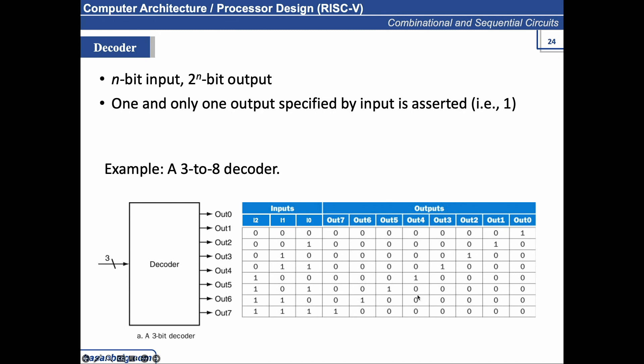So here is a truth table for this one. I0, I1, and I2 corresponds to 3 inputs. And when we have 3 inputs, we have 8 possible combinations. So 0, 0, 0, 0, 0, 1, 2, 3, and so on. So you can see for this combination, output 0 is 1, for input combination 1, the out 1 line is set to 1, and all others are 0.